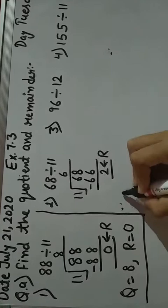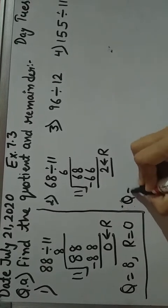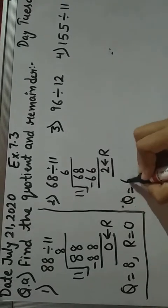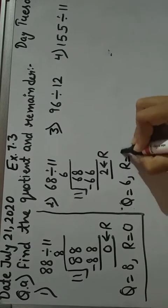So this is your remainder. Your quotient is here 6 and remainder is 2.